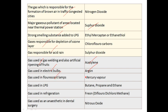The gas used in LPG is butane, propane, and ethane — mainly butane and propane. The gas used in refrigerators is freon.